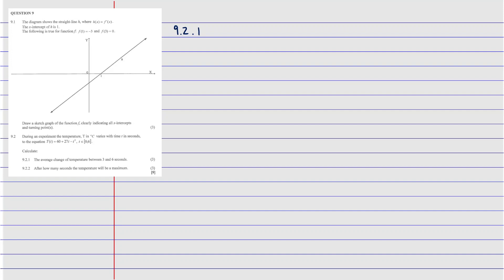Question 9.1.2 says: calculate the average change of temperature between t = 3 and t = 6. The average change is going to be equal to T(6) minus T(3), divided by 6 minus 3.